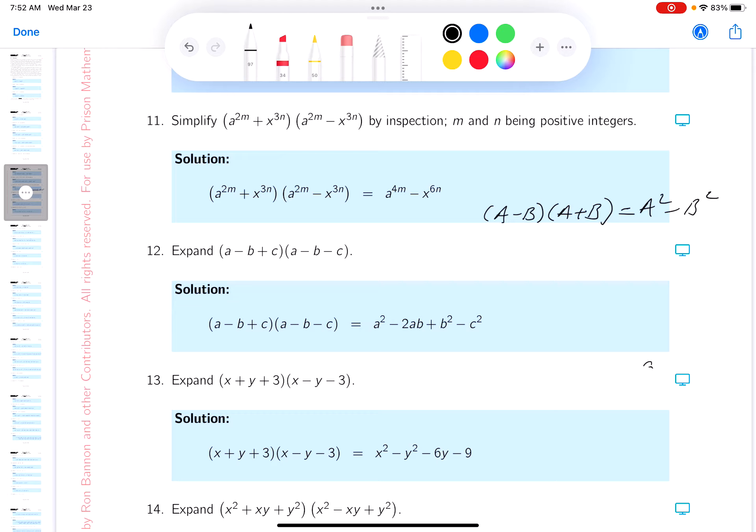If you see that, the answer is written down pretty quickly. It's going to be a to the 4m minus x to the 6n, and you're done.